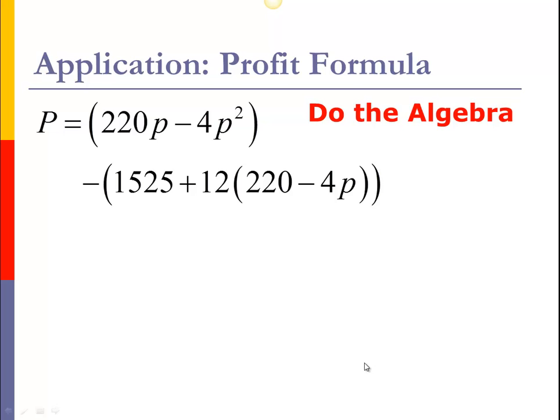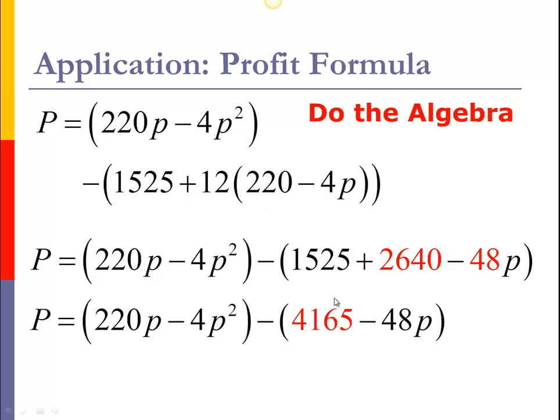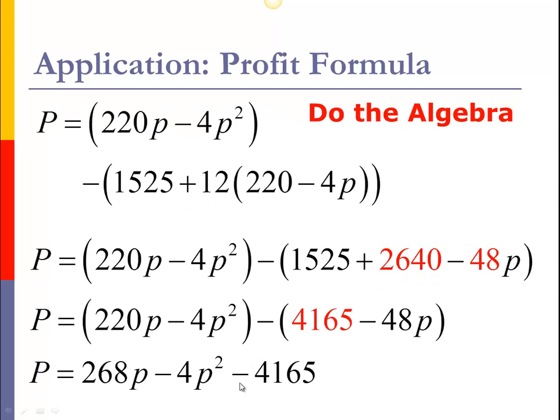Now we're just going to do some algebra to clean up this formula. Let's multiply the 12 through, combine the 1525 and 2640 to get 4165. Then do the subtraction. Recall that this negative minus a negative 48P makes it a positive, so that's why this becomes 268. We have P = 268p - 4p² - 4165, a nice formula ready to go for profit.